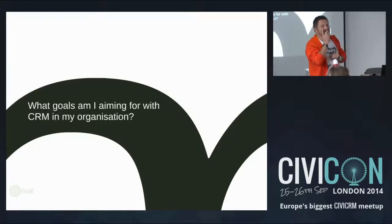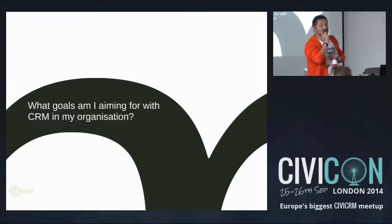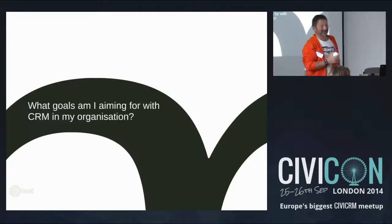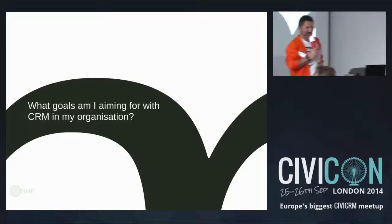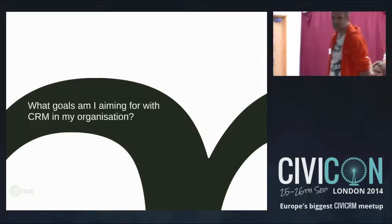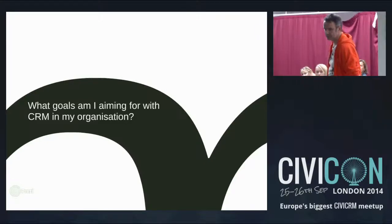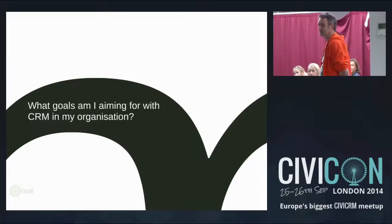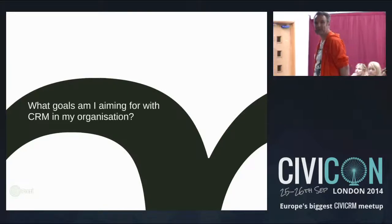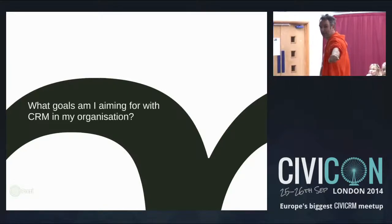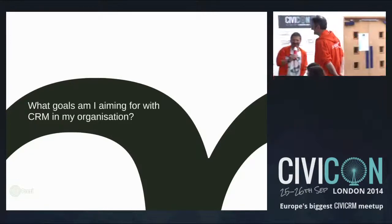We've started using Civi about two years ago, and our goal was to increase our fundraising. But I think we've got a bit lost — it's so flexible, there are so many places to go. So I think the question for us is: we know what we want to do, but how do we find the steps in between and take the most direct way? We'll hope to get to part of that answer.